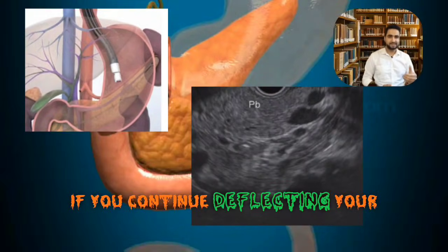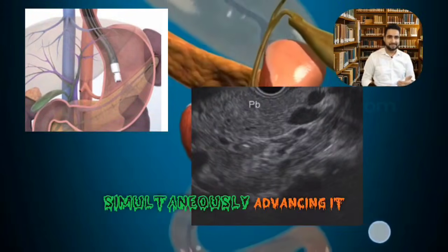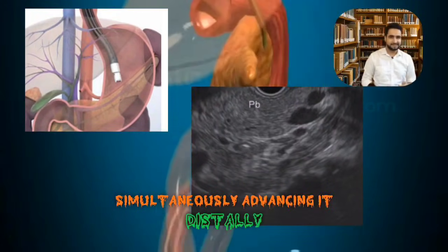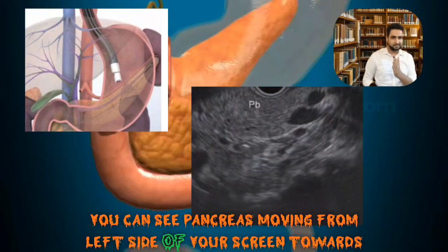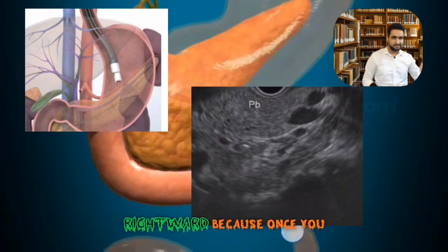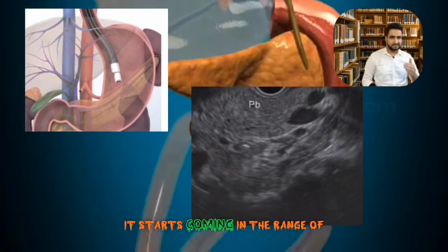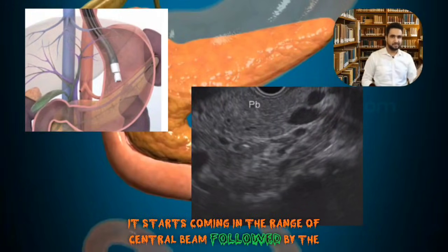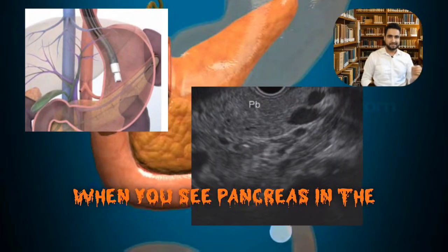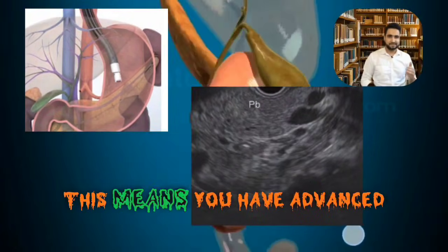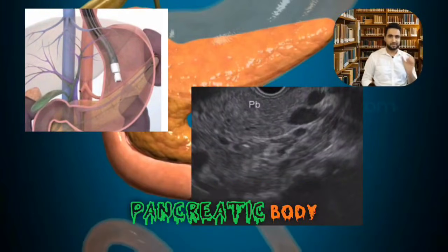If you continue deflecting the probe away from you and simultaneously advancing it distally, you can see the pancreas moving from the left side of your screen toward the right, because it starts coming in the range of the central beam followed by the shaft beam. When you see the pancreas in the center of your screen, this means you have advanced your scope to the level of the pancreatic body.